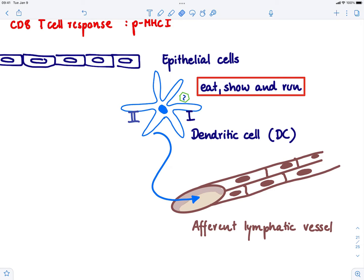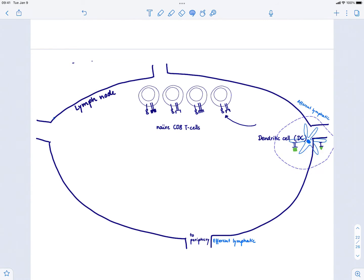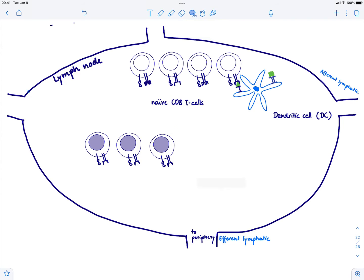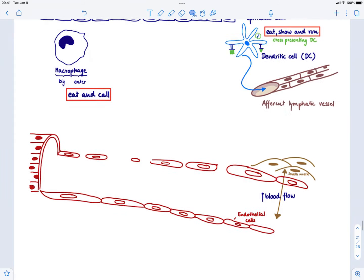How do we get a CD8 T cell response? Well, we only get a CD8 T cell response if this dendritic cell goes to the lymph node, presents the virus via MHC class 1, and then finds the T cell, activates it, and then this T cell can go back to the site of infection and start killing all these virally infected cells.